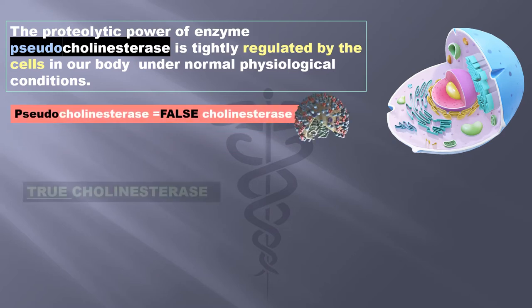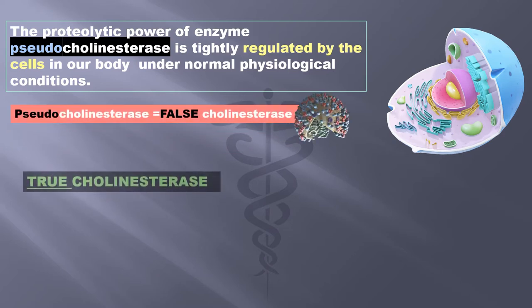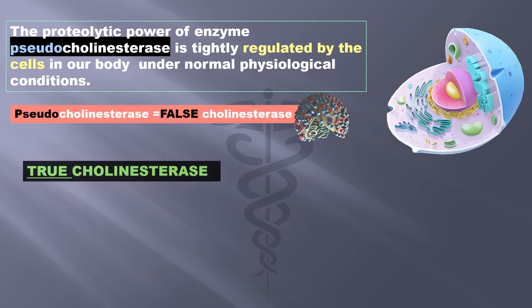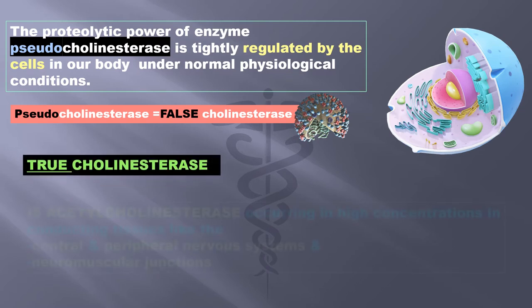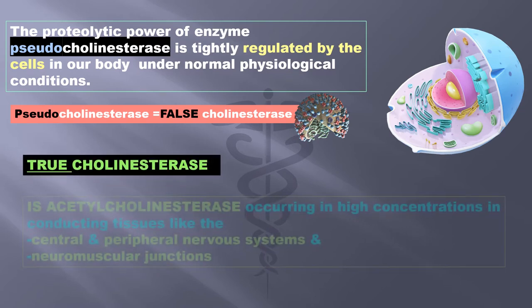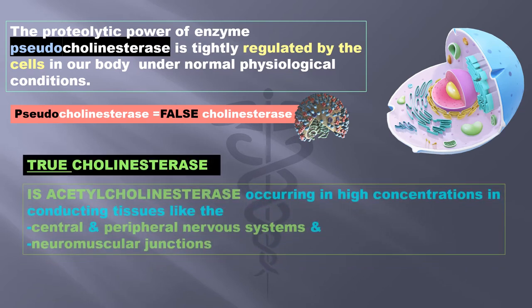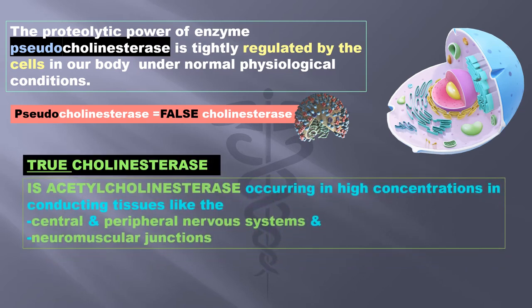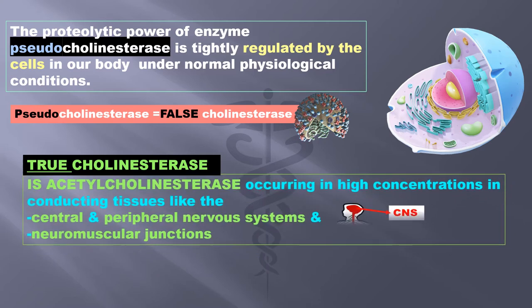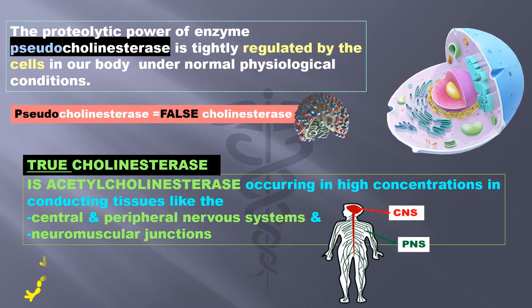Pseudo means false, so this is a false cholinesterase. True cholinesterase is acetylcholinesterase, occurring in high concentration in conducting tissues like the central and peripheral nervous system and neuromuscular junctions.